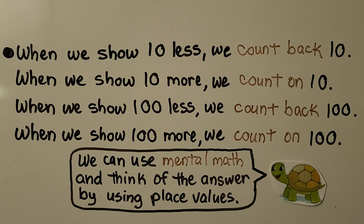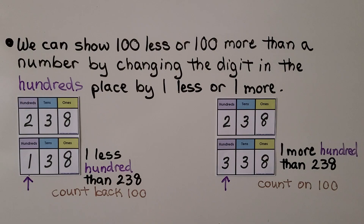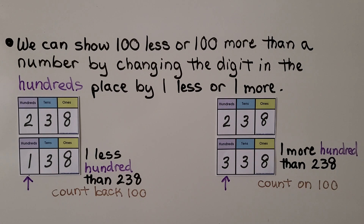We can use mental math and think of the answer by using place values. We can show 100 less or 100 more than a number by changing the digit in the hundreds place by 1 less or 1 more.